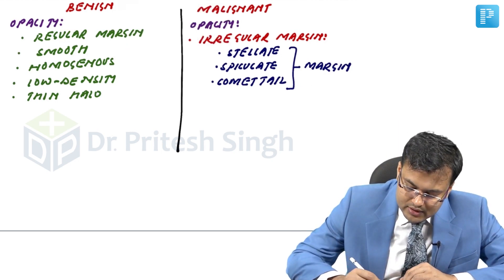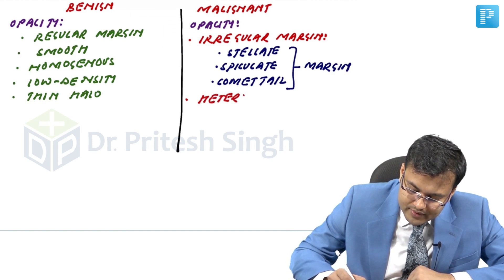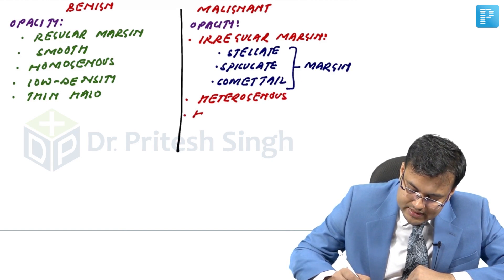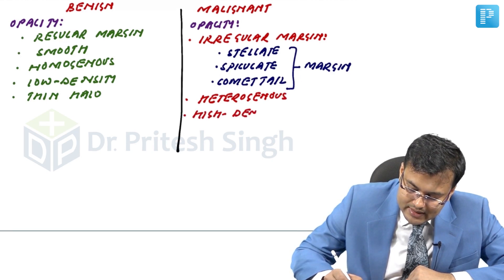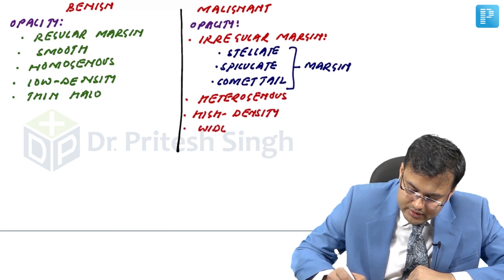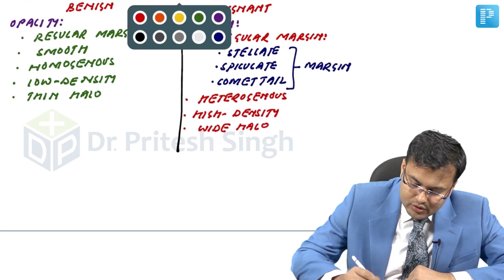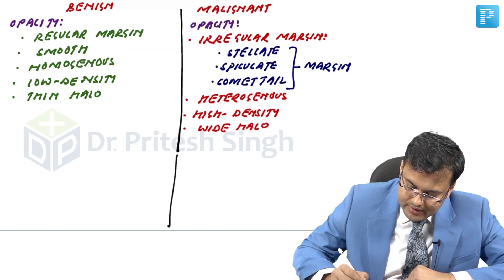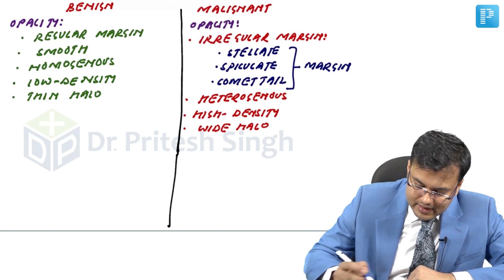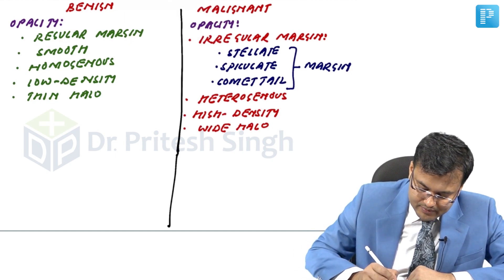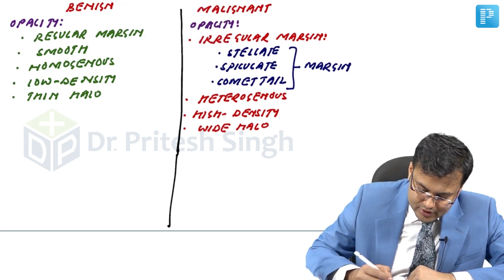For malignant opacity, just opposite to benign: benign is homogeneous so malignant is heterogeneous; benign has low density so malignant has high density; benign has a thin halo so malignant has a wide halo.